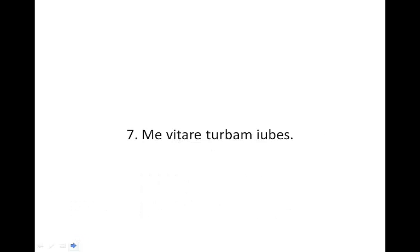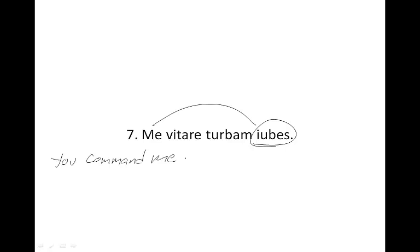Number seven and eight — I want to take these two together. They aren't especially hard, but there's maybe one thing to look out for. With number seven, where's the verb? Person and number? Well, here's the verb — it's glossed, it's 'you command' or 'you order.' Who's getting this command? Well, me — 'you command me.' And then we have another verb: vitare. We've seen this before; it's a complementary infinitive. You just tack it onto the first verb: 'you command me to avoid.' Command me to avoid what? Turbam, the crowd — again, that M there, dead giveaway, that's the accusative. So: 'you command me to avoid the crowd.'